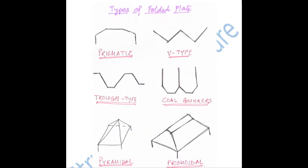Here are a few examples of types of folded plates: prismatic, V-type, trough type, coal bunkers, pyramidal, prismoidal. This may appear in gate questions as an MCQ where a diagram is given and you must identify which type of folded plate structure it is, so it is important to know the names.